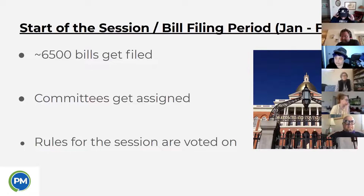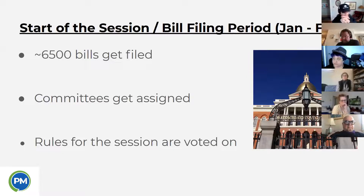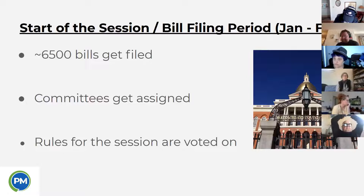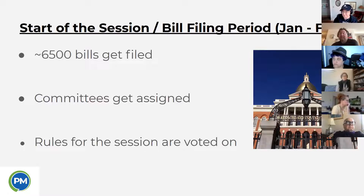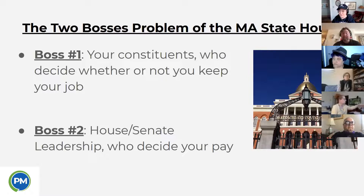At the start of session, committees get assigned — you can look at committee assignments to get a sense of who's up or down in the eyes of House and Senate leadership. Committee chairmanships and vice chairmanships come with extra money. The rules for the session are voted on — we've seen that recently with the Senate voting on rules for its own chamber, joint rules, and rules around remote voting. The House has only voted on joint rules and punted for several months to vote on rules for its own chamber.